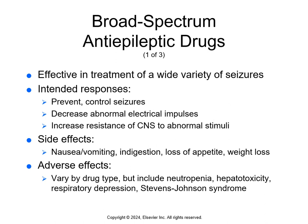Broad-spectrum anti-epileptic drugs are effective in treating a variety of seizures. The intended response is to prevent and control seizures, decrease abnormal electrical impulses, and increase the resistance of the central nervous system to abnormal stimuli. Ethosuximide (Zarontin) depresses the motor cortex and increases the CNS threshold. Valproic acid (Depakote) may work by increasing availability of GABA. Side effects include nausea and vomiting, indigestion, loss of appetite, and weight loss, along with mental confusion, drowsiness, dizziness, headaches, constipation, depression, and nervousness. Adverse effects of ethosuximide include neutropenia, pancytopenia, and aplastic anemia. Adverse effects of valproic acid include hepatotoxicity, pancreatitis, and bone marrow depression.